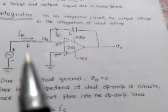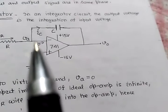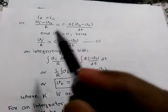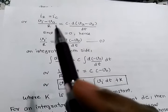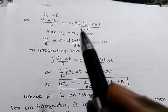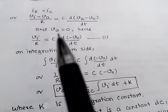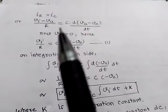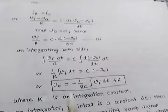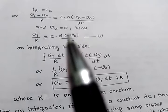IR is written as Vi minus Va upon R, and IC is written as C into d(Va minus Vo)/dt. Due to virtual ground, VA is equal to zero. Substituting VA equal to zero, this expression reduces to Vi upon R equals C into d(minus Vo)/dt.